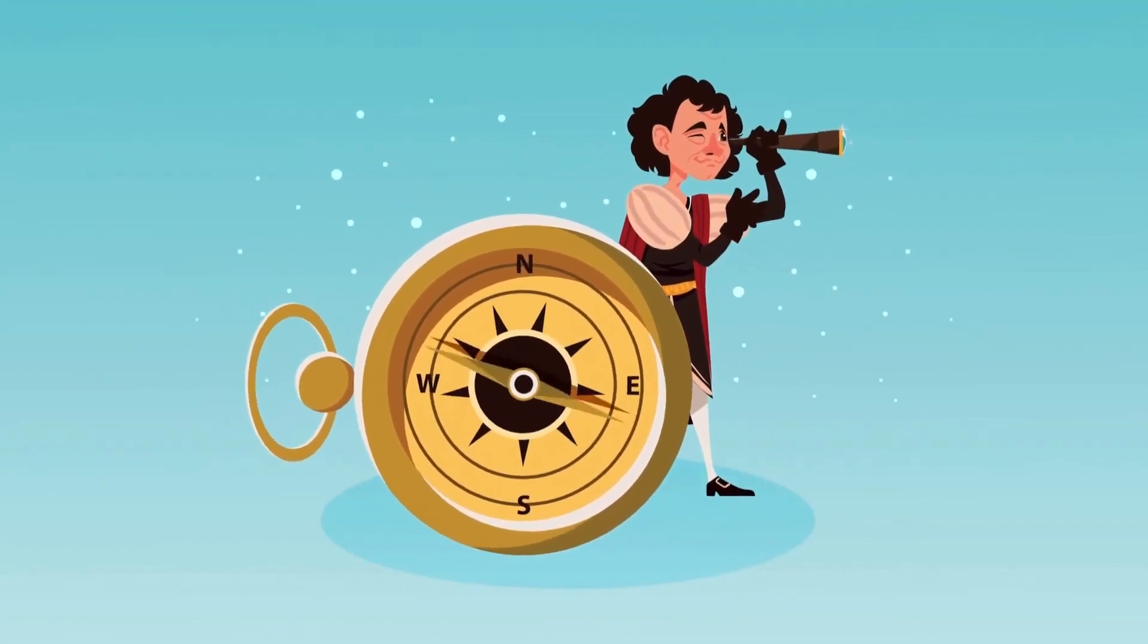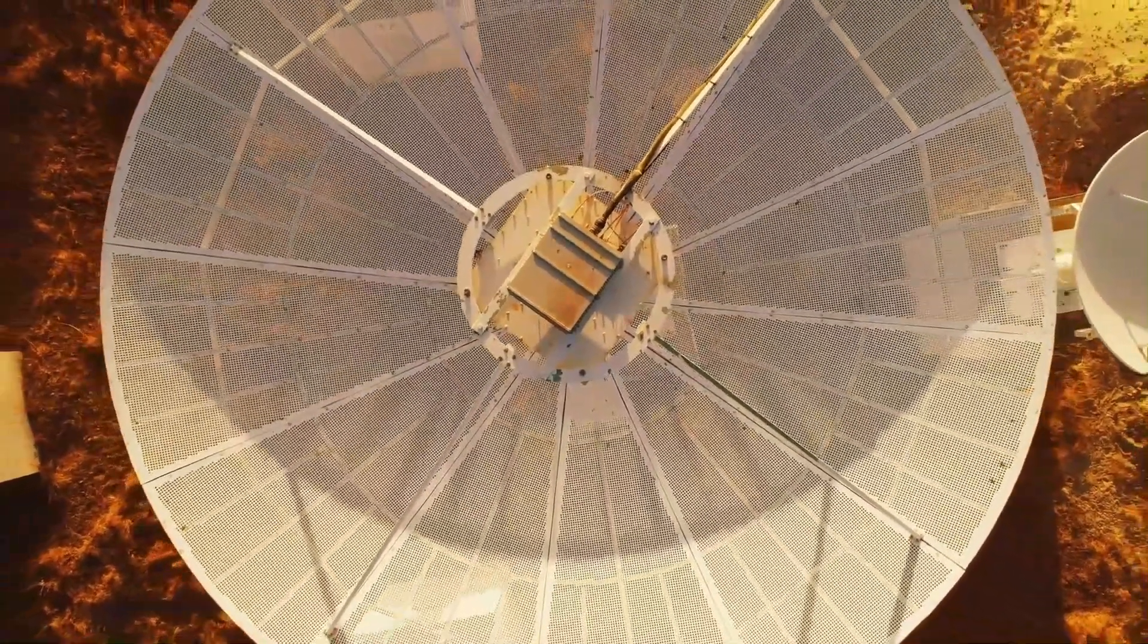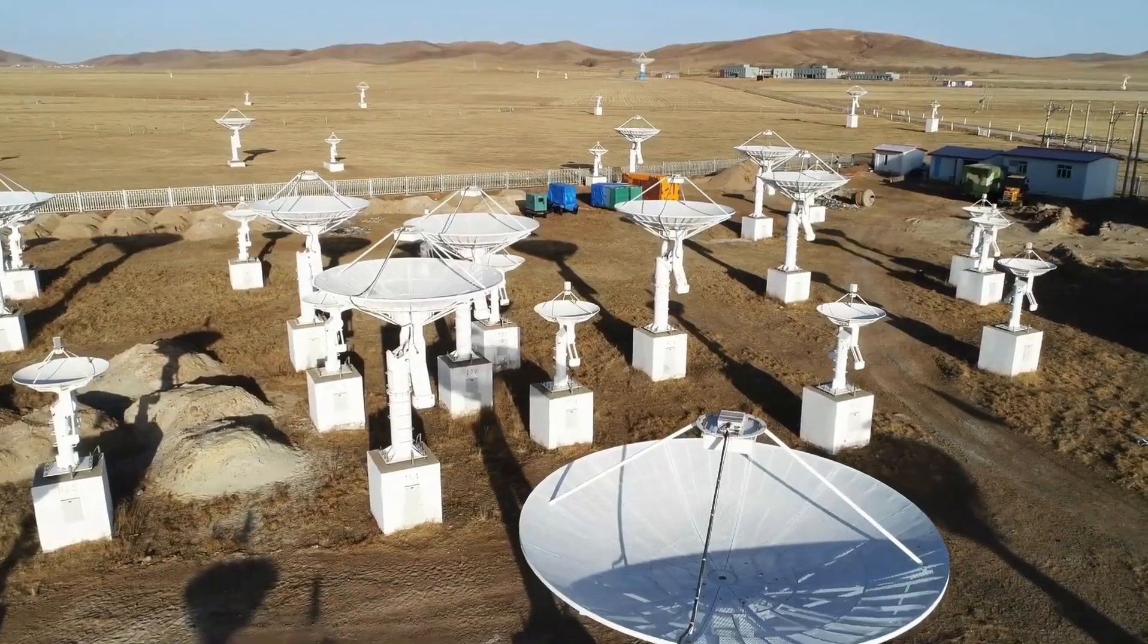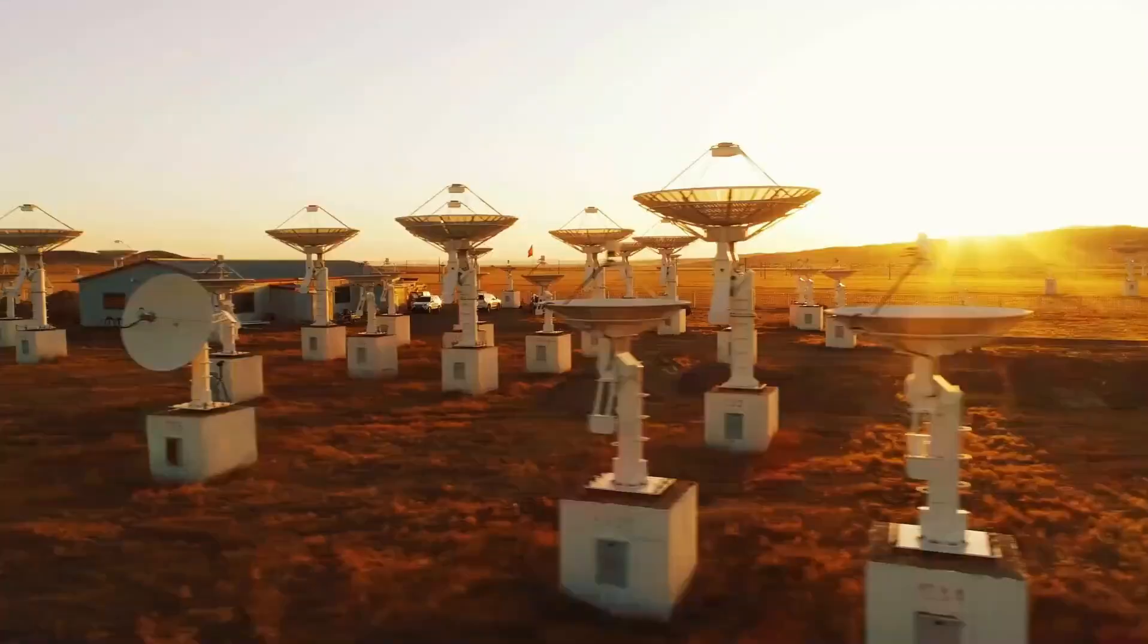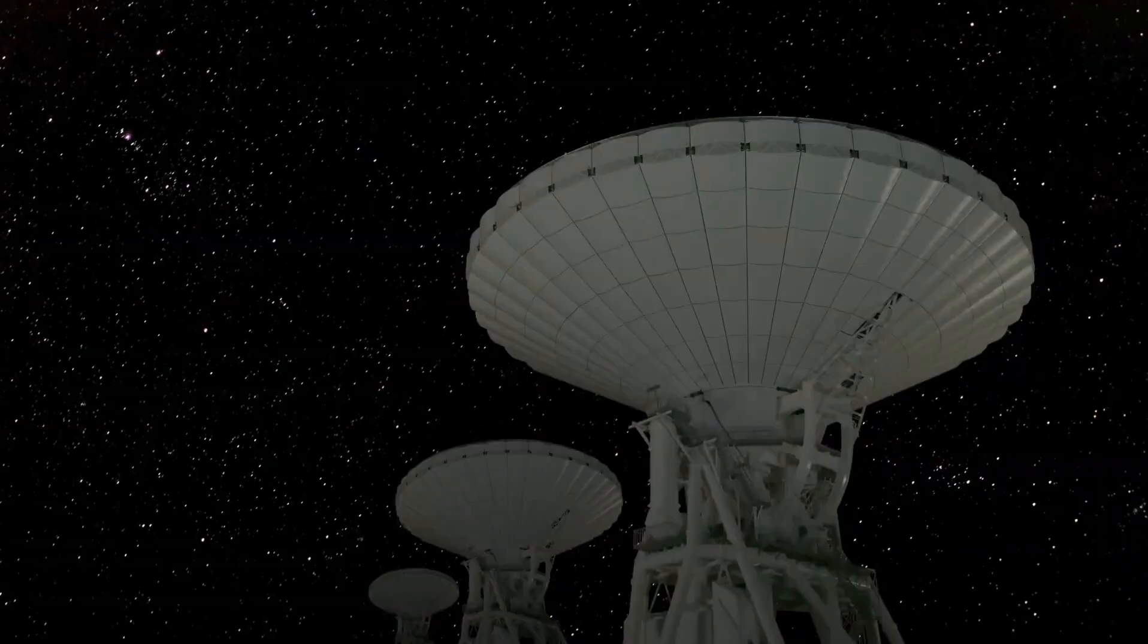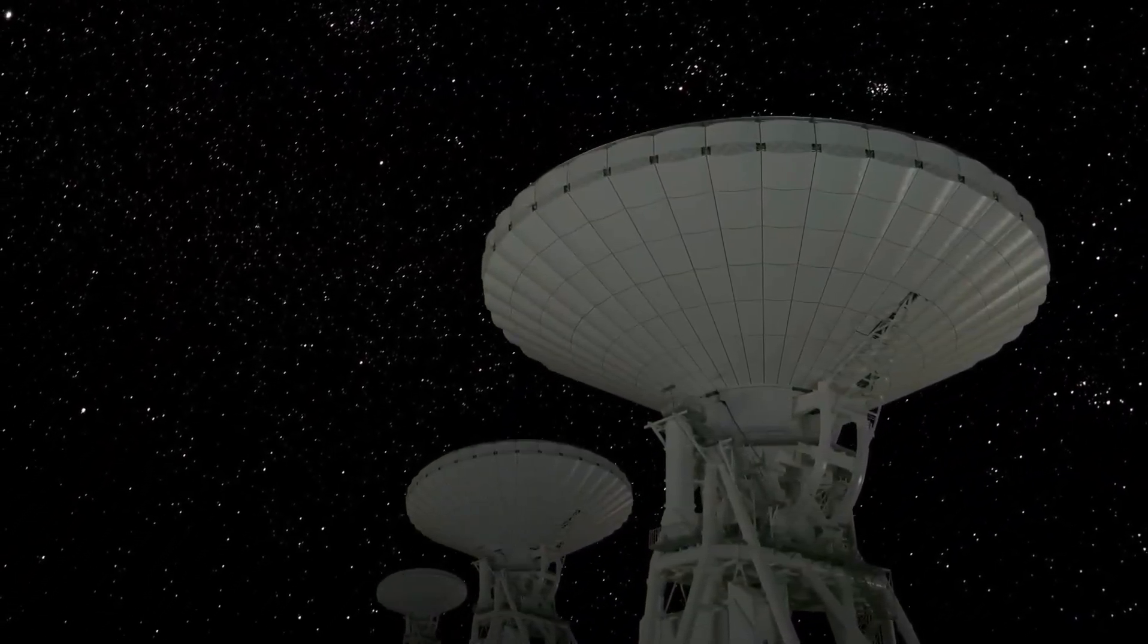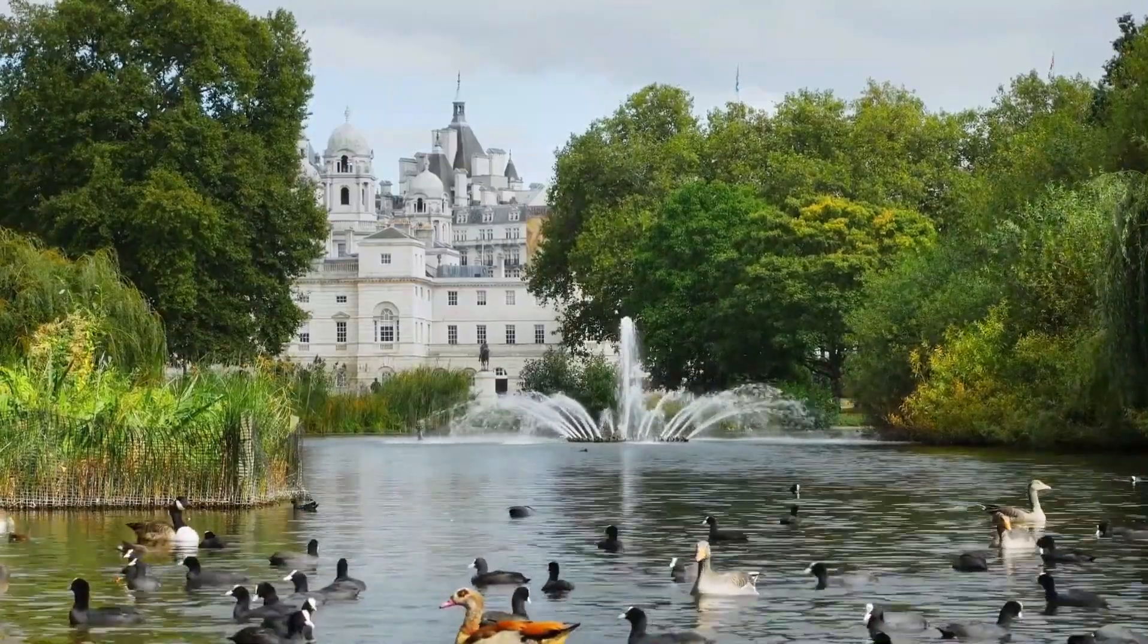Superhabitable planets are specific celestial bodies that offer a higher potential for harboring life compared to Earth. The common belief is that the Earth, as the only known planet with life, meets the necessary criteria. One of the main criteria is the presence of liquid water. It is for this reason that we search for a planet similar to Earth in the hope of finding places where life can also exist. However, it is important to recognize that other types of planets may offer conditions equal to or even more conducive to life compared to Earth.